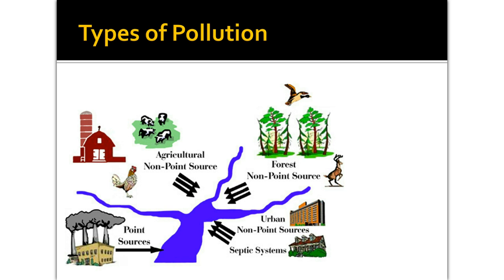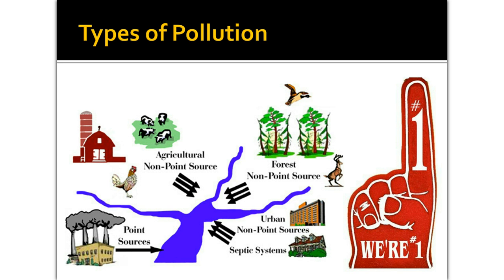We usually don't think of it that way, but technically a forest is polluting another environment. We also have urban non-point sources, like runoff from roads, septic systems, and general runoff from any area. The big thing to remember for distinguishing between a point source and a non-point source is: can you point to it? If you can point at it and know it's coming from one spot, it's a point source. If you're not sure where it's coming from, it's a non-point source.